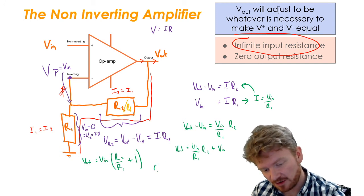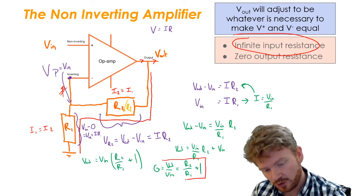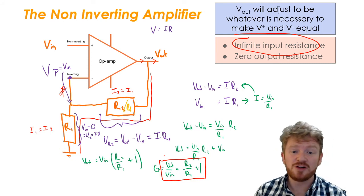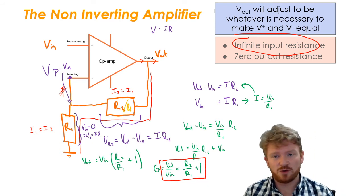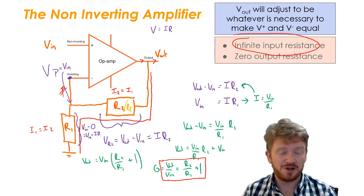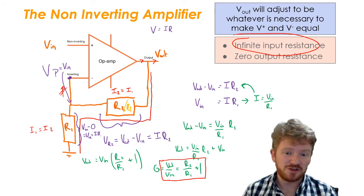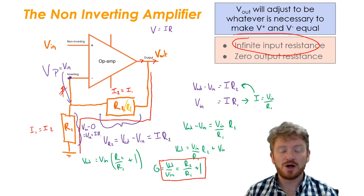And then if I want to rearrange that to find the gain, which is Vout over Vin, then that just becomes R2 over R1 plus 1. And that is the equation for the gain of a non-inverting amplifier. Hopefully you can see that this is one that will be non-inverting, because I've got no negative signs in here. I haven't taken the negative of the input voltage. If I put in a positive input voltage, I will get a positive output voltage. If I put in a negative input voltage, I will get a negative output voltage. You also notice there's plus 1 here. That's really important to take account of that when you're calculating the ratio of your two resistors, you need to remember that you will always add 1 to it.